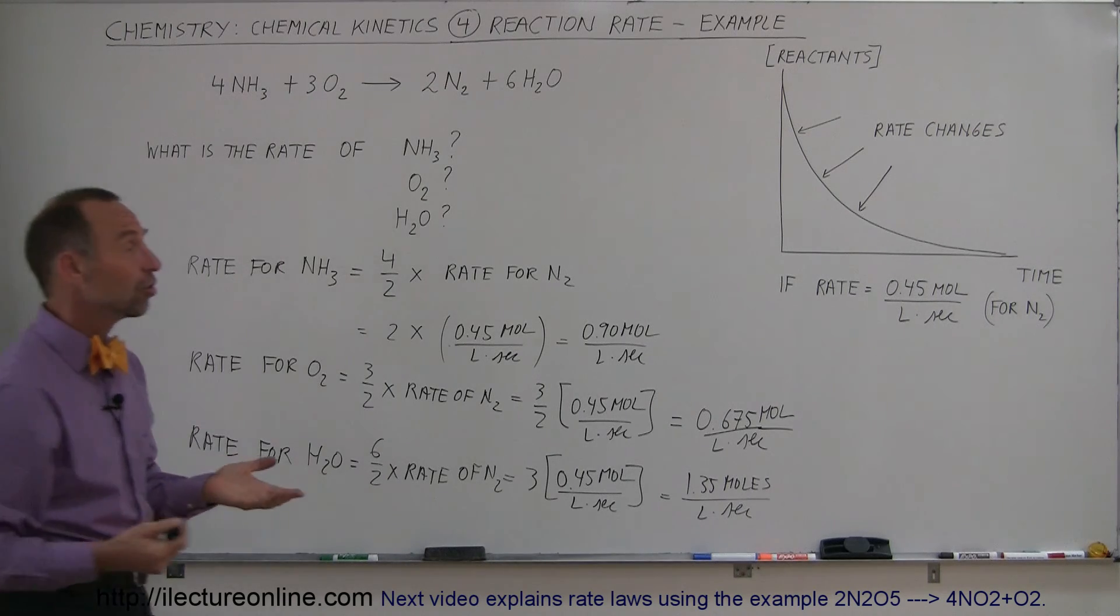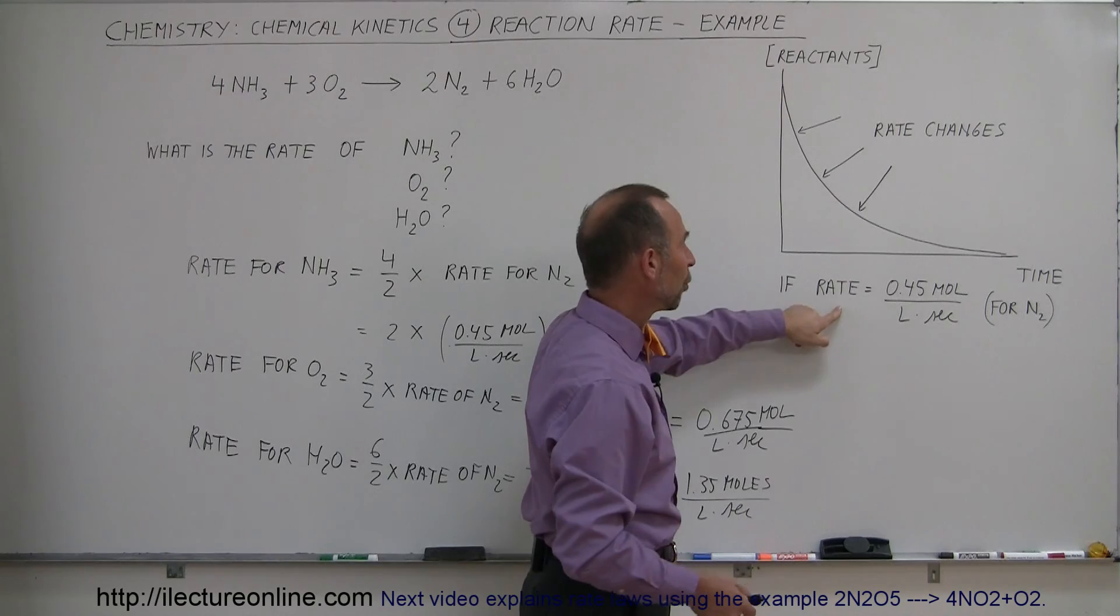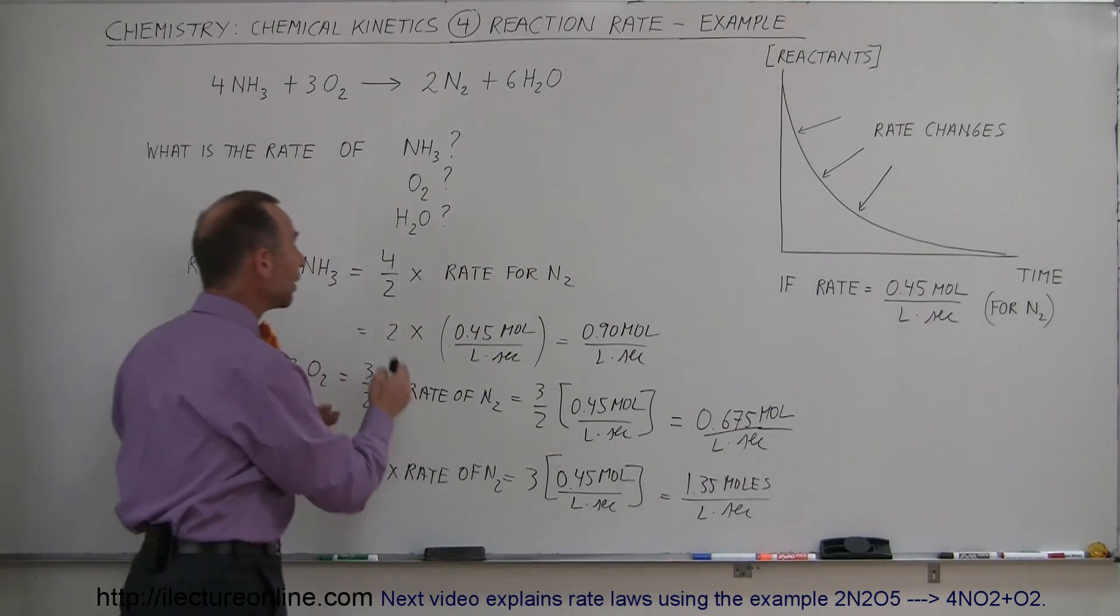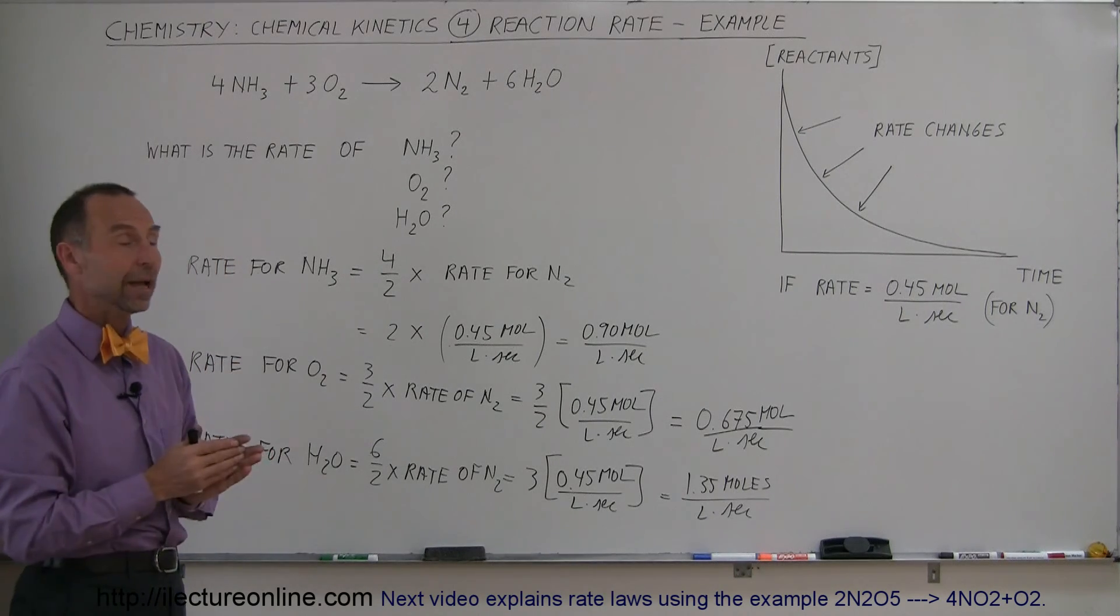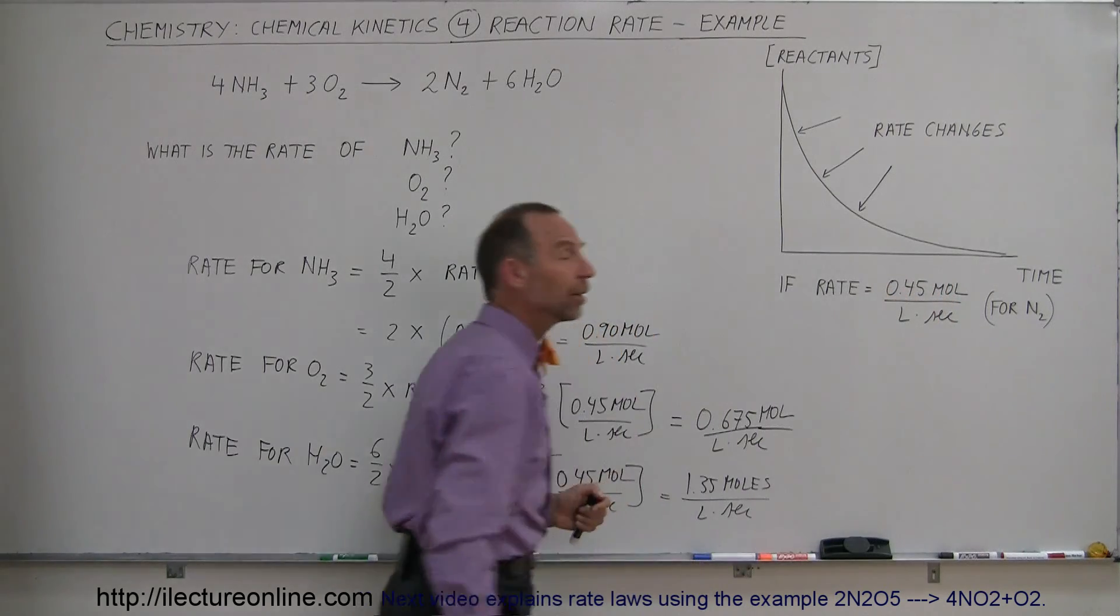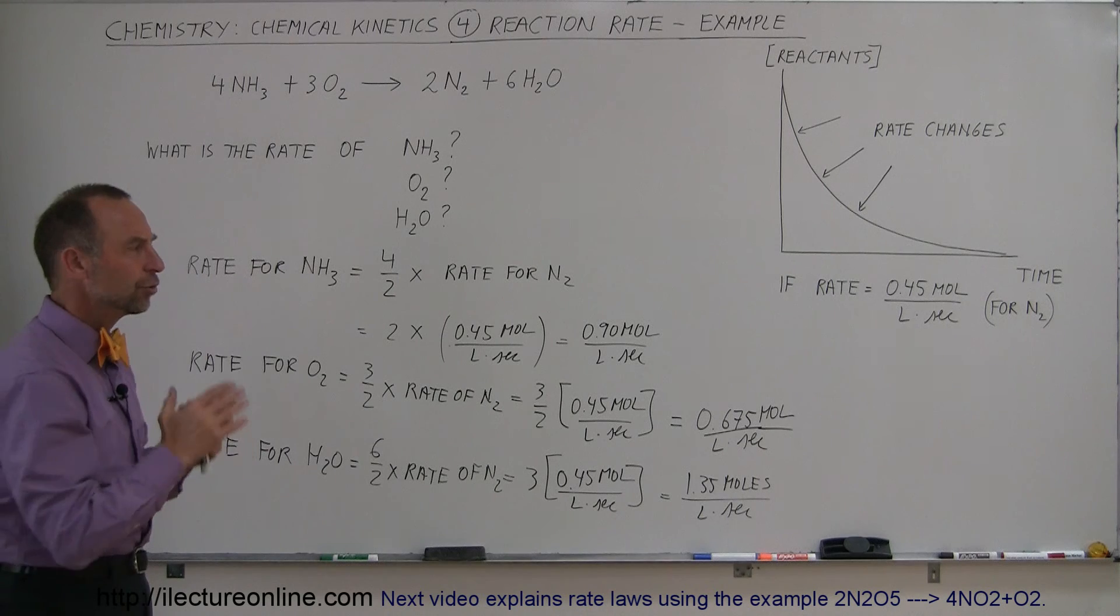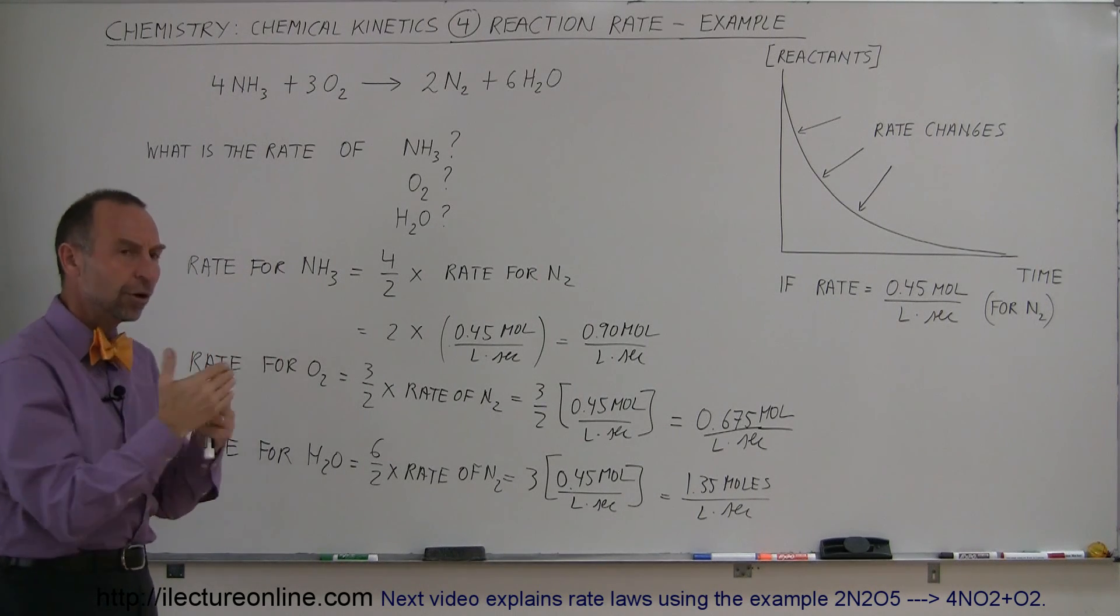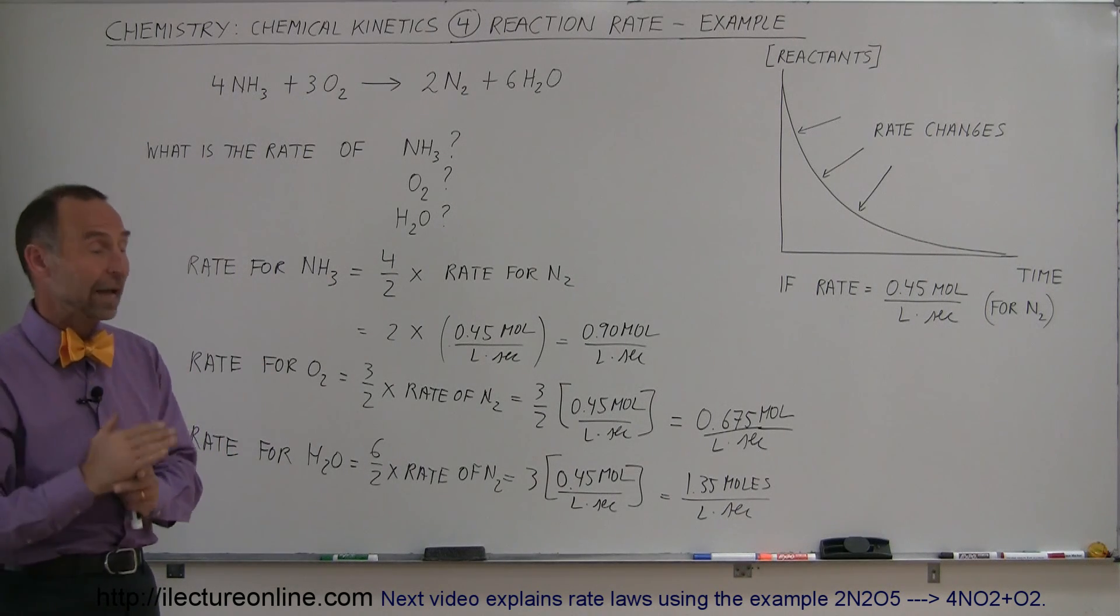Now, what happens when that changes? Let's say that we let a little bit more time elapse. Now the rate for the nitrogen gas will be different, but proportionally, the rate for the other reactants and the other product will change in the same way. So if we go further in time and this now goes to half the rate it was before, then of course all of these will also change by half. So you can see that whatever the rate is for one, and whatever the rate is for the others, there'll be a certain ratio between those rates, and that ratio never changes during the reaction.